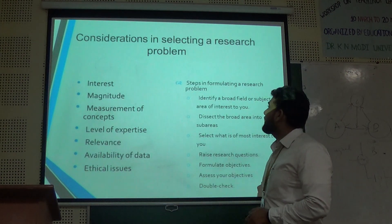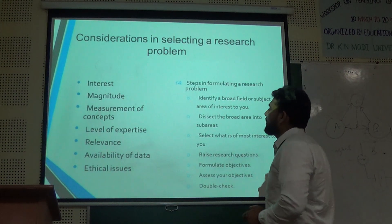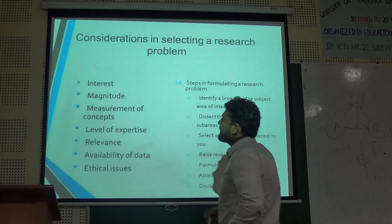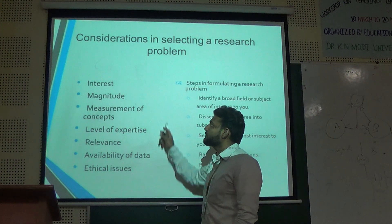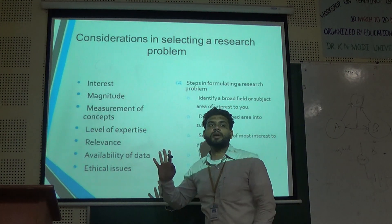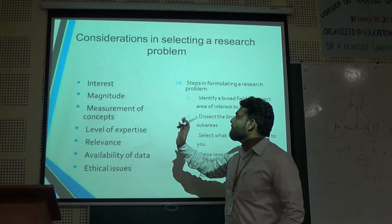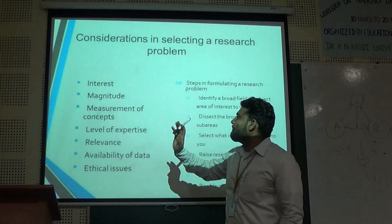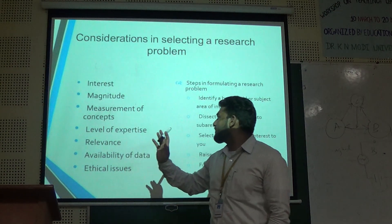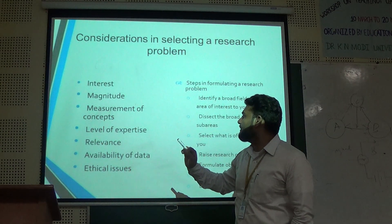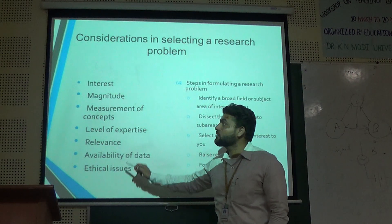Considerations in selecting a research problem: how do we consider a research problem? The key factors are: interest, magnitude, measurement of concepts, level of expertise, relevance, availability of data, and ethical issues.